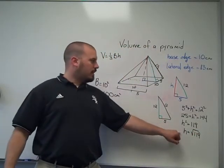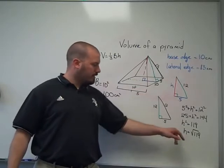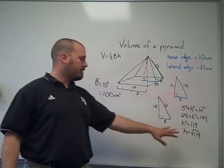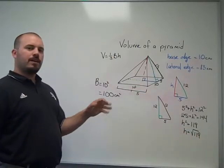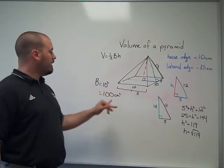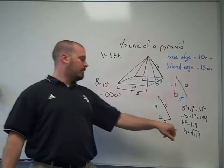So our height of the pyramid is the square root of 119. That won't simplify. I think it's 7 times 17. So we've got everything we need. We have our area of the base, we have our height, and now we can find the volume.